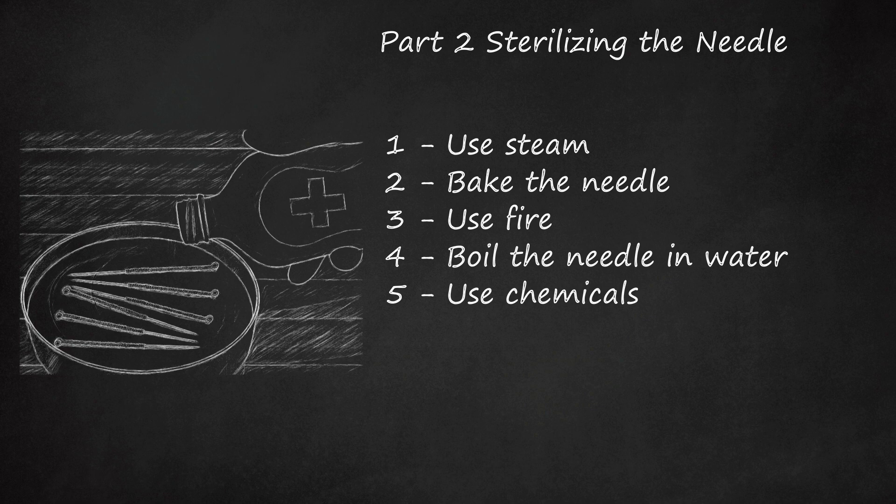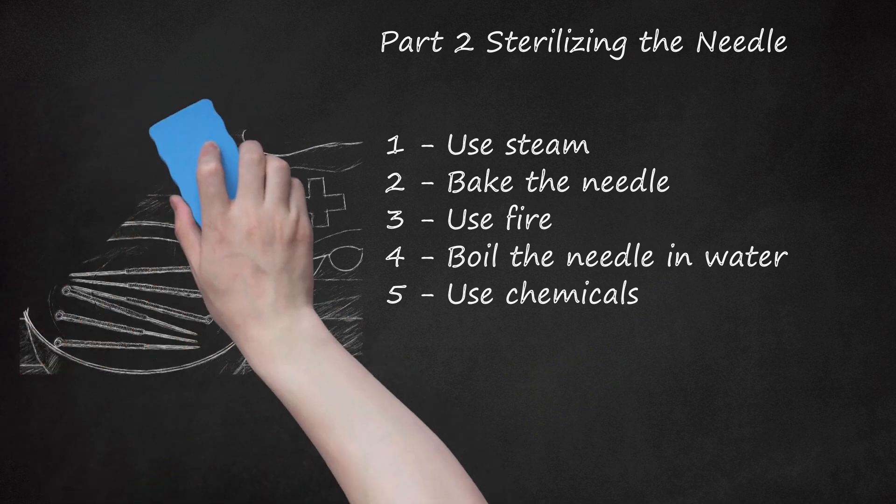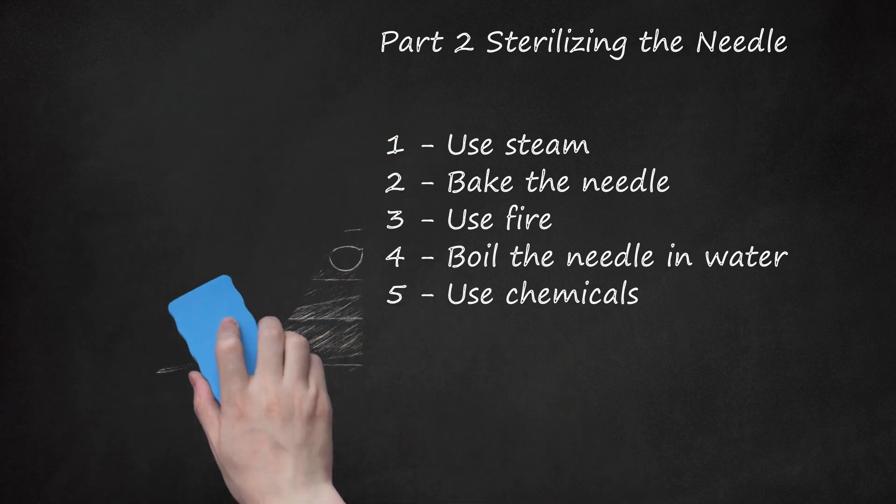Rubbing alcohol. Bleach: If it's 5% available chlorine, you can use it undiluted. If it is 10%, use 1 part bleach to 1 part water. For 15%, use 1 part bleach to 2 parts water. Hydrogen peroxide. Gin or vodka.